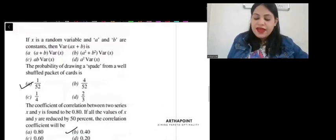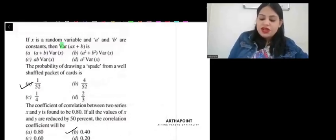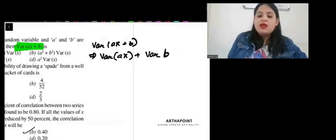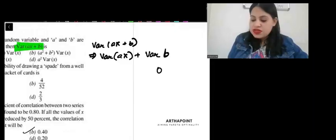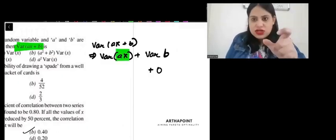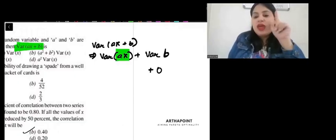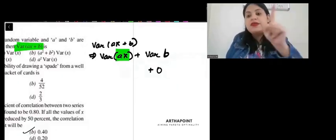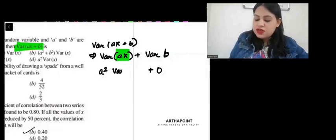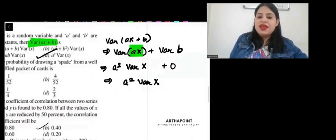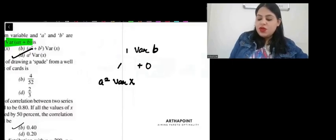Come to the next question. If x is a random variable, a and b are constant, then variance ax plus b. Variance of ax plus b will be variance of ax plus variance of b. Variance of a constant is 0. So, this will be 0. And whenever a constant is with a variable, a is a constant, x is a variable. When a constant comes with a variable, you can take the constant out, but with a square. So, this becomes a square variance of x. So, answer to this question will be d, it will be a square variance of x.